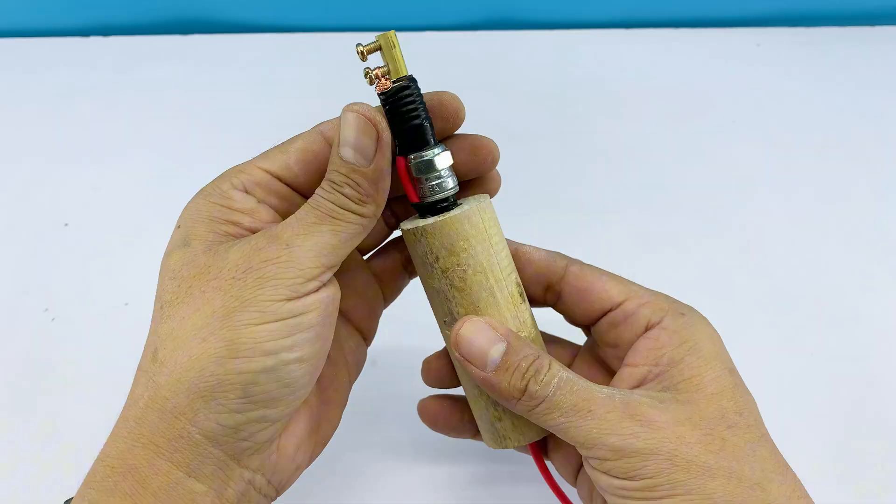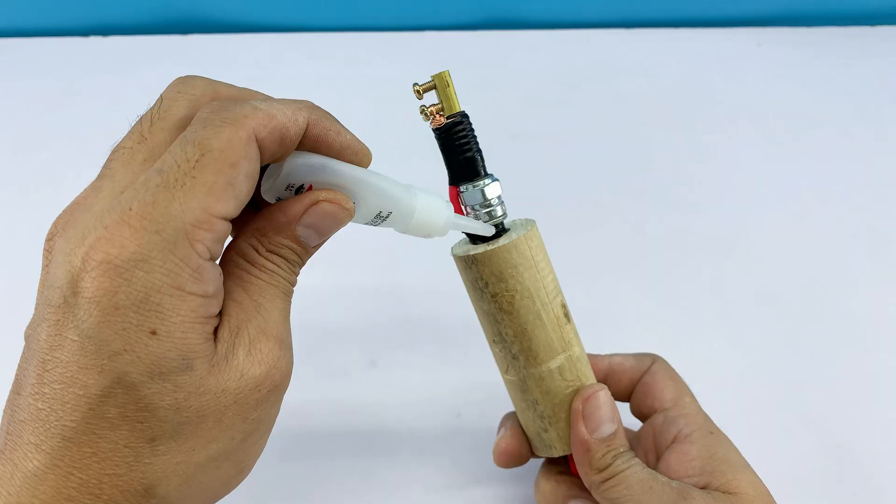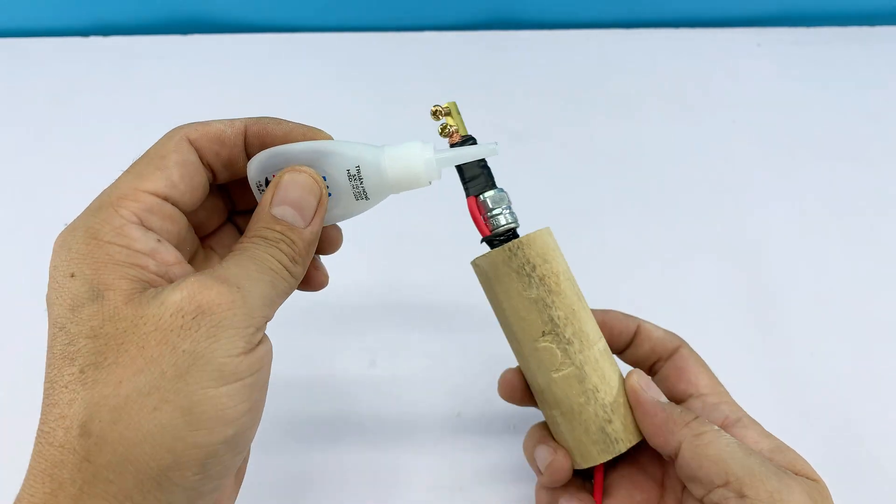If the hole ends up a bit wider than intended, don't worry. A small amount of liquid adhesive will fill the gap and help the spark plug sit firmly in the handle.